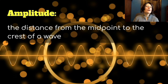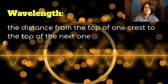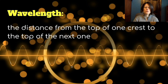We also talk about amplitude — this is the distance from the midpoint to the crest of a wave, from that equilibrium position to the crest. We also talk about wavelength: the distance from the top of one crest to the top of the next one, crest to crest. You could also measure trough to trough, or from any point to the corresponding point on the next cycle — it's one complete up and down.